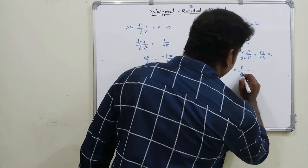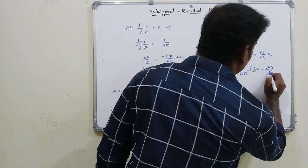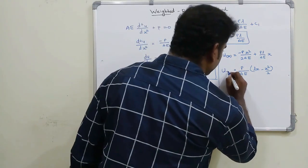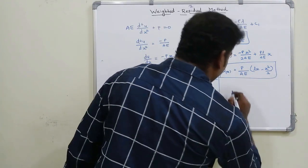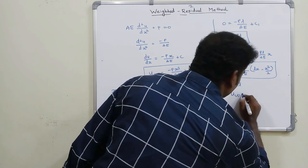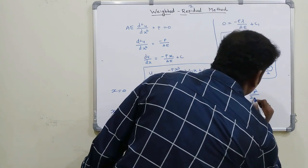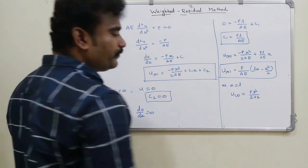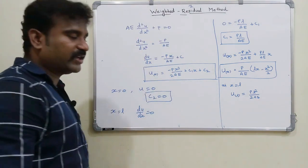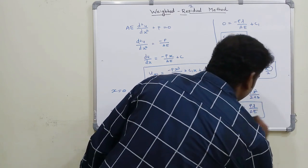The exact solution is: u(x) = −px²/(2AE) + (pL/(AE))x = (p/(AE))(Lx − x²/2). Evaluating at x = L and differentiating with respect to L gives δL = pL/(AE) — the same result as the approximate solution. So the exact and numerical methods agree.